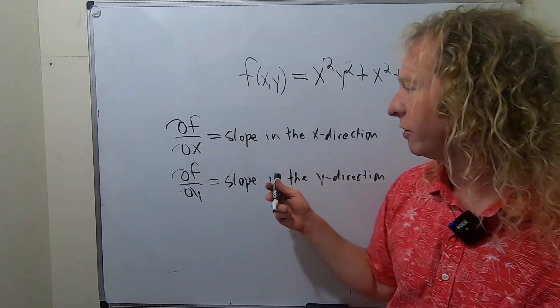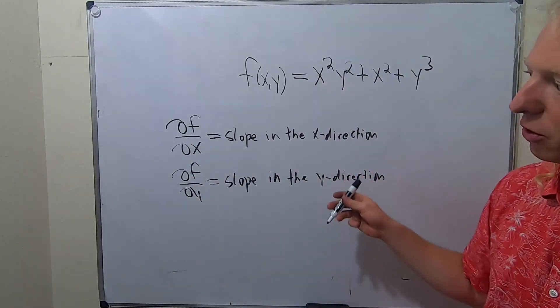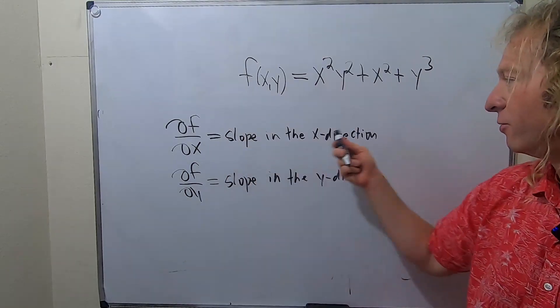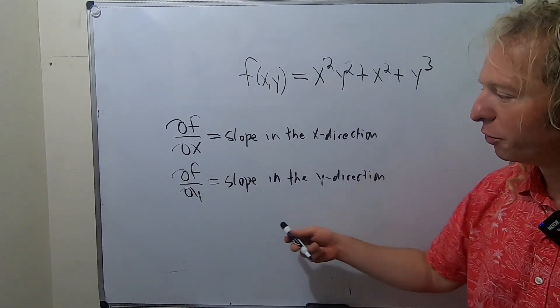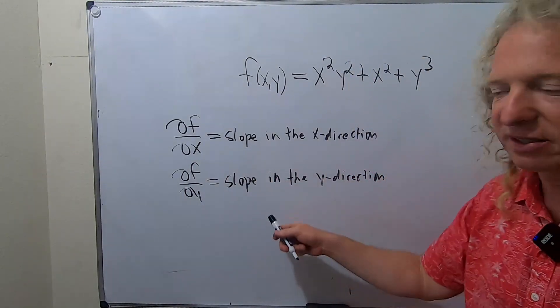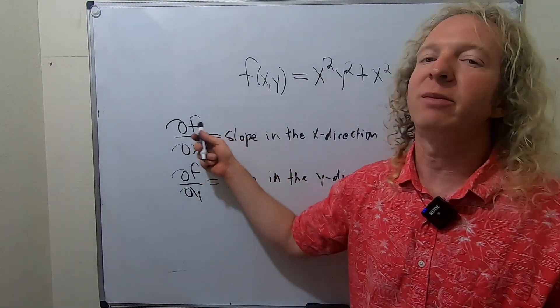So when you're computing partial derivatives, you fix the other variables. When you're computing this, you fix y. When you're computing this, you fix x. In other words, the other variables are constants.